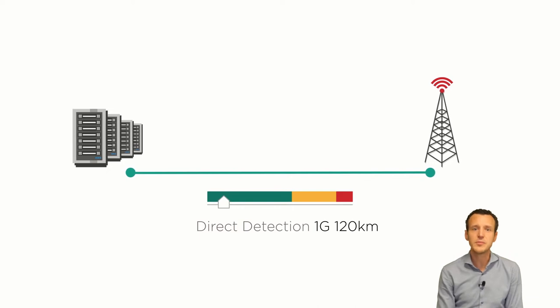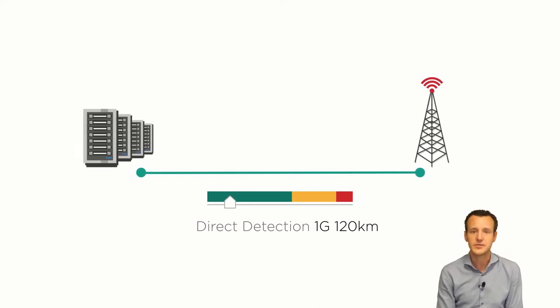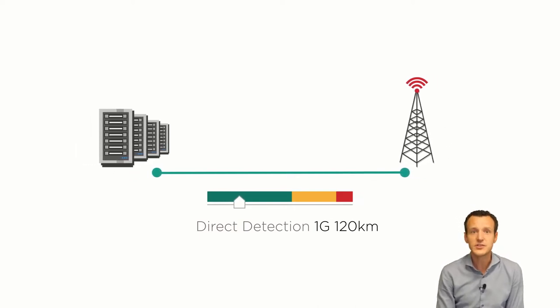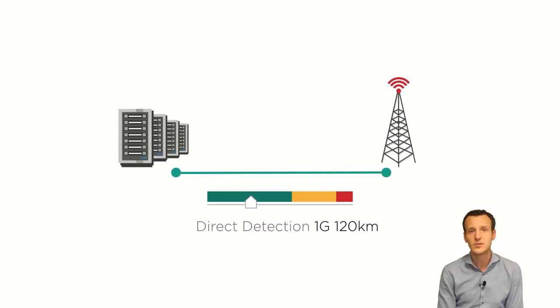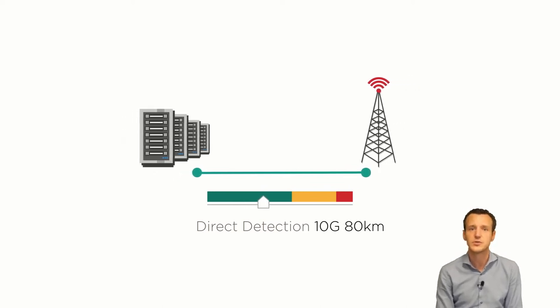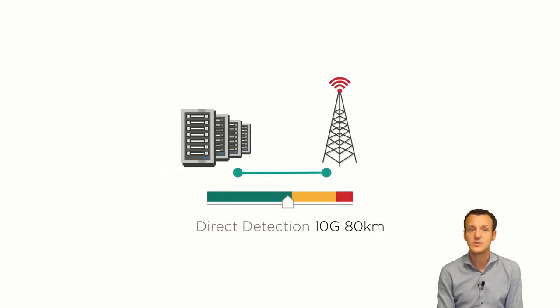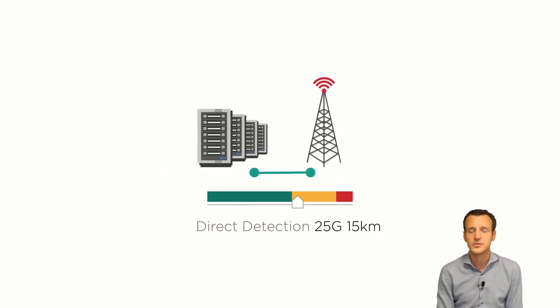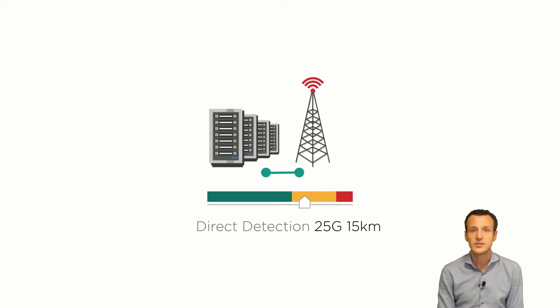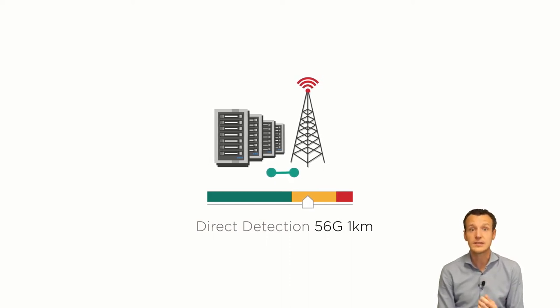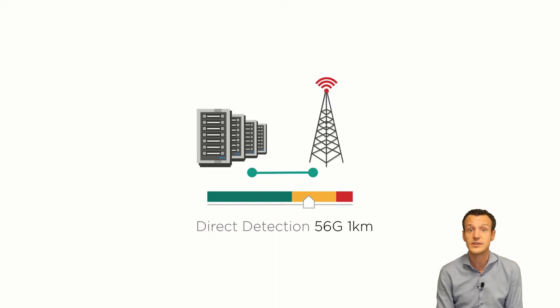In direct detection we use the amplitude of the light to encode information. The transmission distance that you can achieve depends on the data rate of the signal that you are using. At lower data rates the link length that you can achieve is over 100 kilometers. However, as the signal speed or data rate goes up, the link length that you can achieve goes exponentially down.